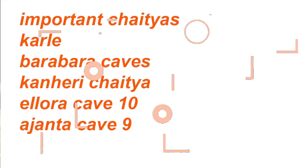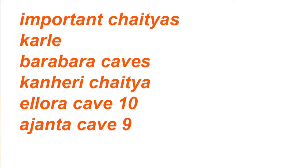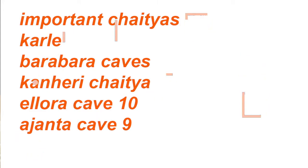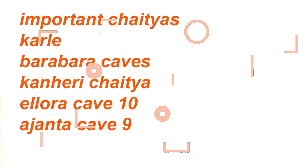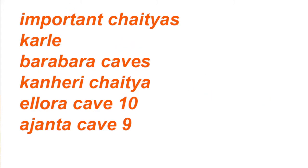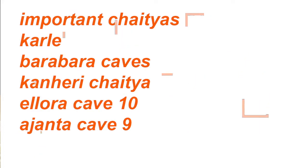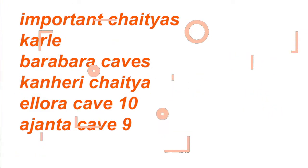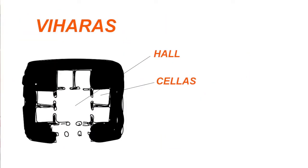Only two Chaityas have Ashoka pillars — one is Karla, and the other is Kanhari. Important Chaityas include Karla, Barbara caves, Kanhari Chaitya, Ellora cave number 10, and Ajanta cave 9, which also have Chaitya halls. We are not sure if they were only Buddhist or possibly also Jain. The caves at Ajanta follow a very similar structure to the Karla Chaitya. Homework number one: go and study these Chaityas, where they are located, and their UNESCO heritage status.